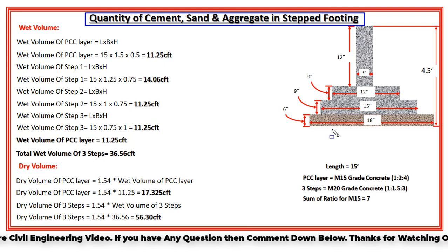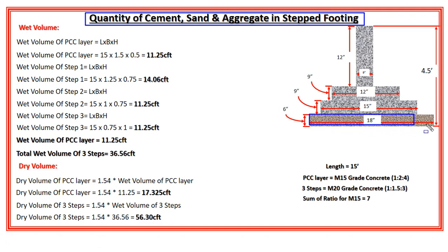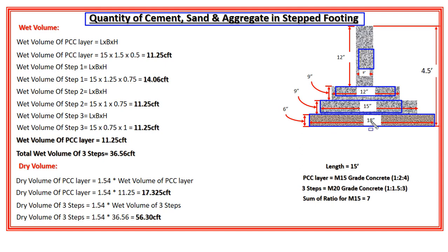First let's talk about the dimensions. As you can see, this stepped footing has basically four steps which are made of concrete. The first step we normally provide in any type of footing is the plain cement concrete layer, or PCC layer, and then we have three more steps made of concrete. Remember that this is not an RCC stepped footing, which means I am not using any steel in the construction of this particular stepped footing.